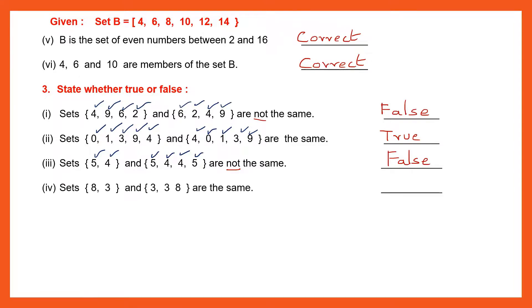Next one: Sets {8, 3} and {3, 3, 8} are the same. Let's see if the elements are there — 8, yes; 3, yes. That means they are the same and the statement also says that. So this statement is true.